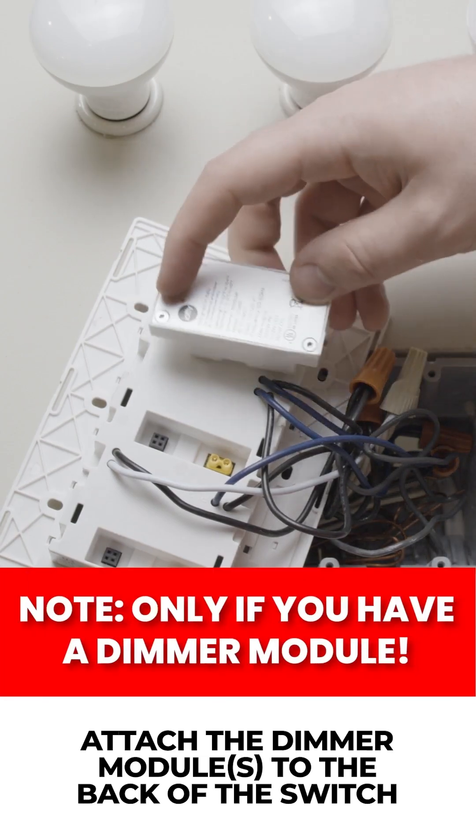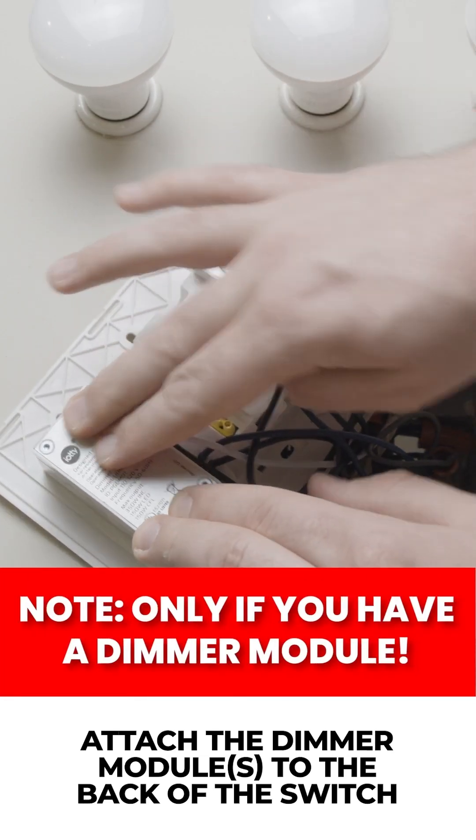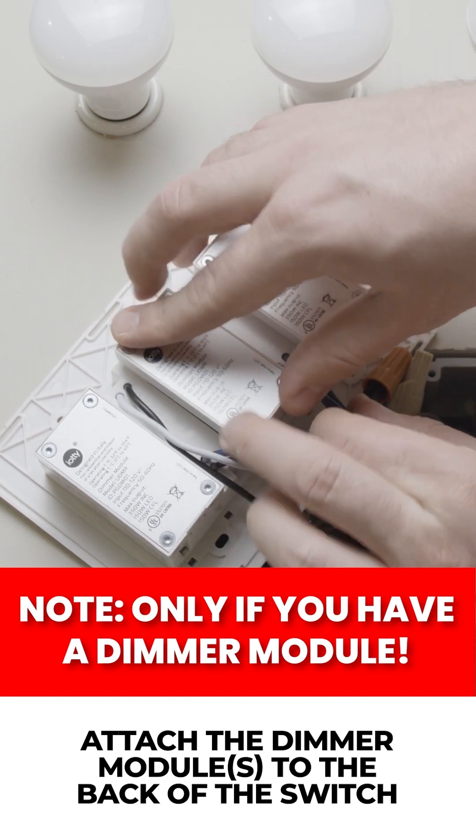Attach the dimmer module to the back of the switch. Please note, this step is only required if you have purchased a dimmer module.